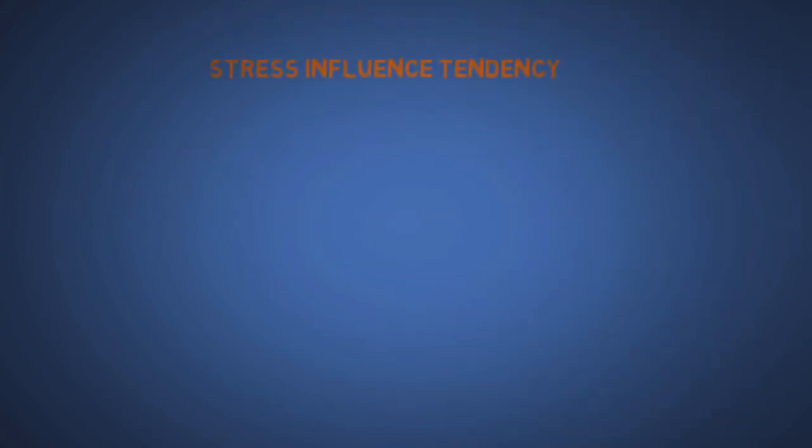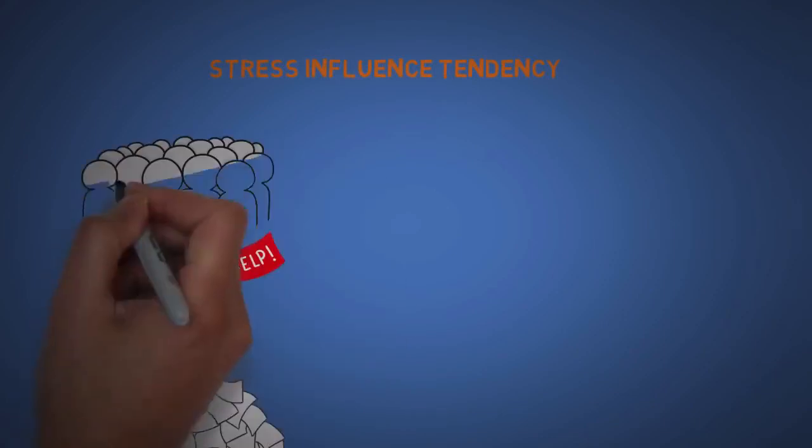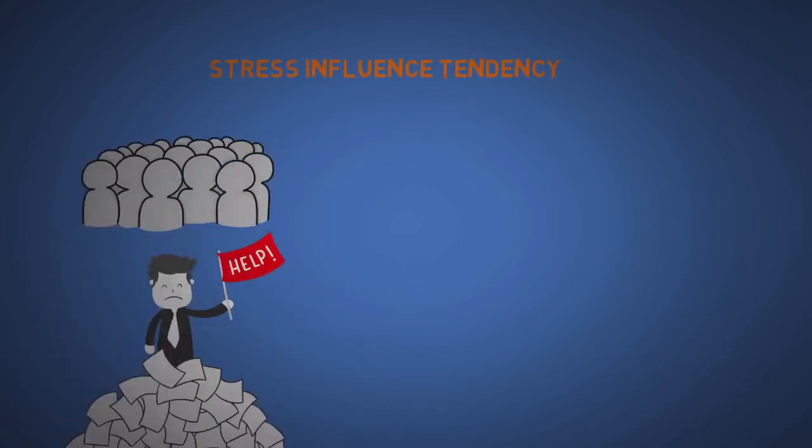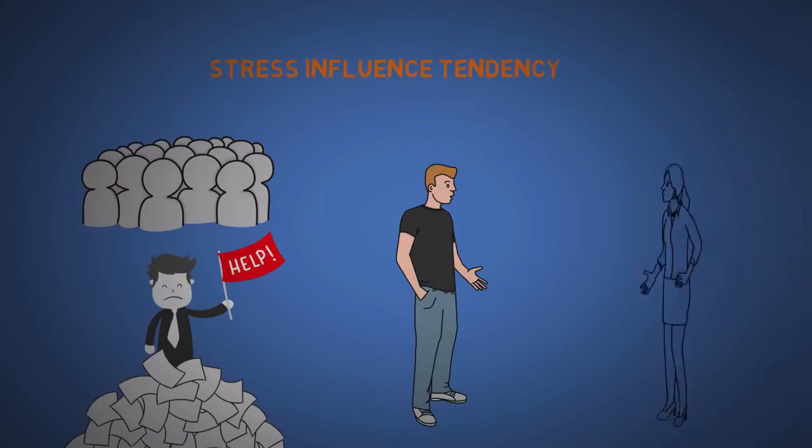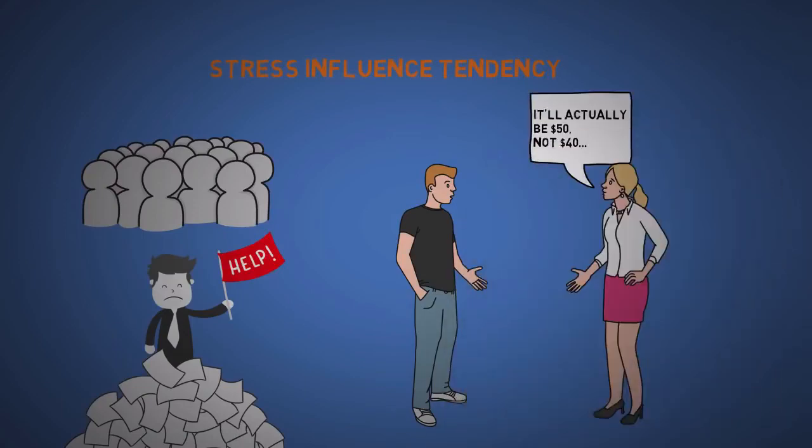The seventeenth is stress influence tendency. Stress can cause us to make bad decisions. Think of timeshares where they might put you in a tight room where you just want to get out. Or there are times when you buy something and they say they're going to check with their manager first, then they come back 10 minutes later, you talk some more and then they say again, well let me go talk to my manager again. Then you say screw it, I'll just take it.